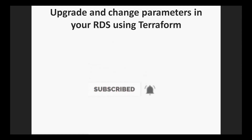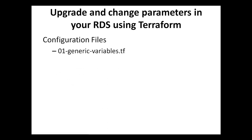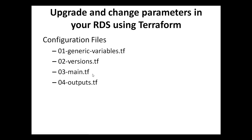Hello everyone. Welcome to InfraExperts. Today we will be seeing how we can upgrade and change parameters in your AWS RDS using Terraform. The following configuration files will be used: 01GenericVariables.tf, versions.tf, main.tf, and outputs.tf. We will be doing this in our previous working directory where we already saw how to create RDS using Terraform. The modifications will only be made in the main.tf.